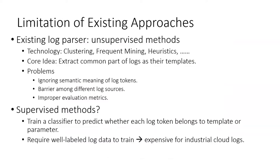Almost all existing log parsers follow the core idea of extracting common parts of raw log messages as log templates, and treating the remaining parts as log parameters. Current approaches include clustering, frequent mining, and heuristics. Although existing log parsers have achieved good performance on some public datasets, there are still some problems. First, existing log parsers only consider static and dynamic properties but neglect the semantic meaning of logs. Second, log contents from different systems are characterized by high diversity, which poses an obstacle to generalization across different systems. Third, existing log parsers are evaluated with improper metrics. These three problems motivate us to change our mindset for log parsing.